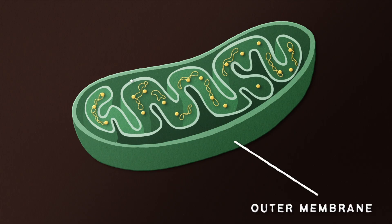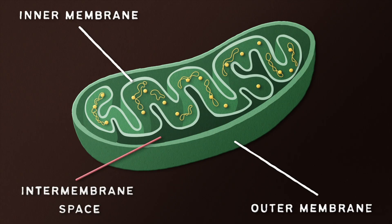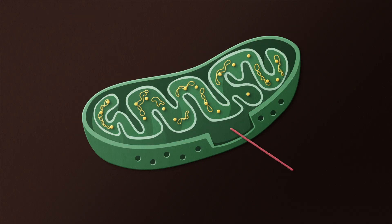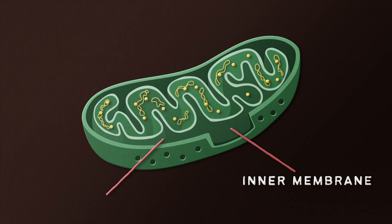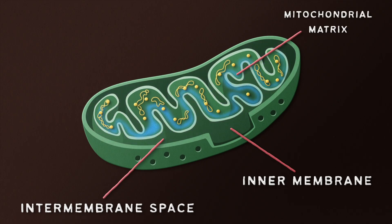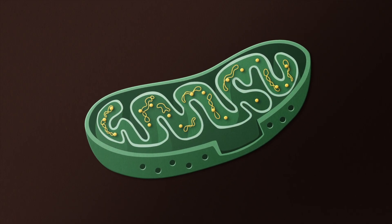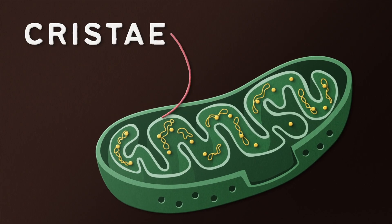Between the outer membrane and the inner membrane is the intermembrane space — another exciting and clever name. Then we have the inner membrane, which in contrast to the outer membrane lacks pores and is relatively impermeable, thus forming a barrier between the intermembrane space and the interior, known as the mitochondrial matrix.